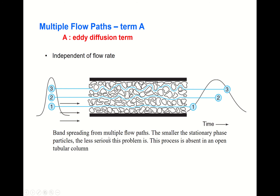Band spreading from multiple flow paths: there will be multiple flow paths, some even longer depending on stationary phase packing. To avoid this effect, make the particle size as small as possible to decrease this broadening. This process is absent in an open tubular column, where the stationary phase is coated on the inside wall — so in that case there is no A term.